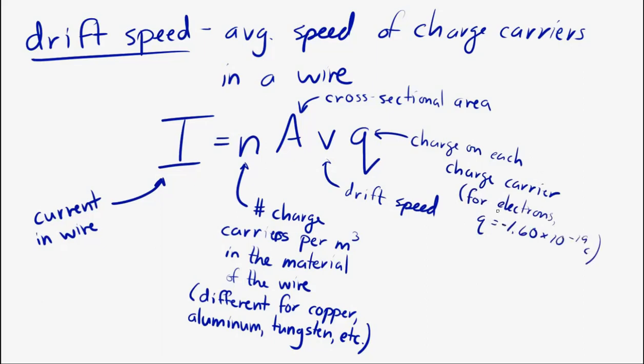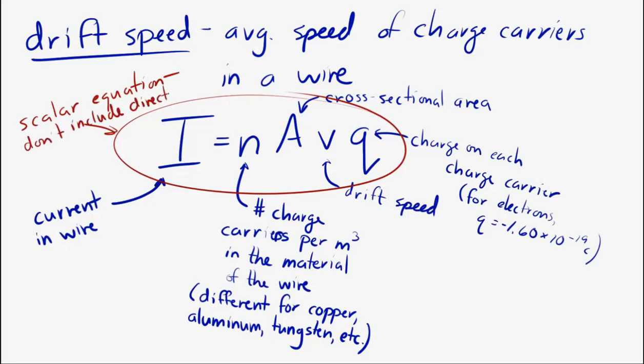And this equation is a scalar equation. It does not tell you about direction. So, you don't put a negative charge into there. And don't put a negative drift speed or anything like that. Because it's speed. Speed doesn't have direction, so it wouldn't be negative. But, yeah. Remember, this equation gives you magnitude. It's a scalar equation. It doesn't tell you anything about direction. Direction, you have to get another way.